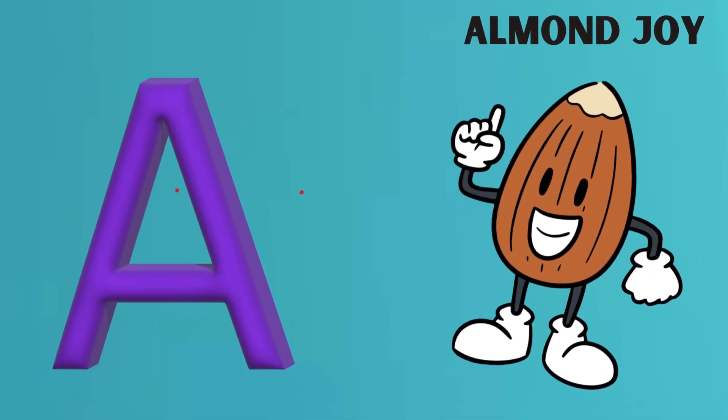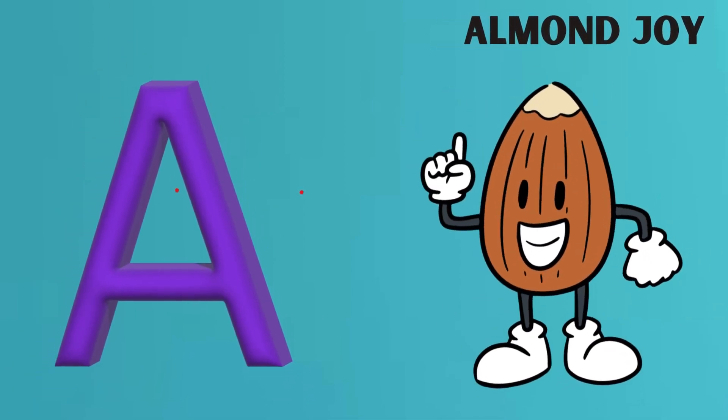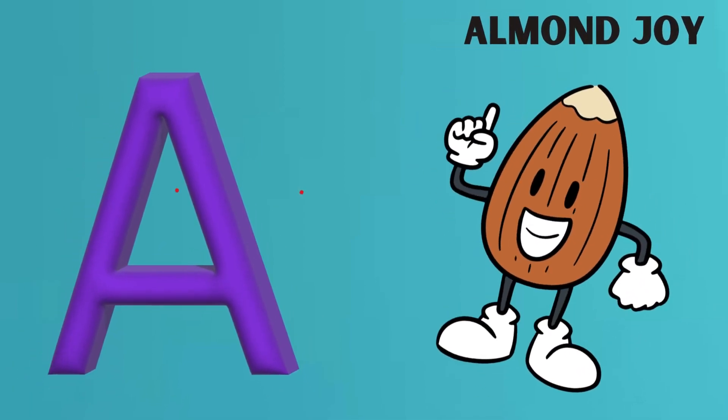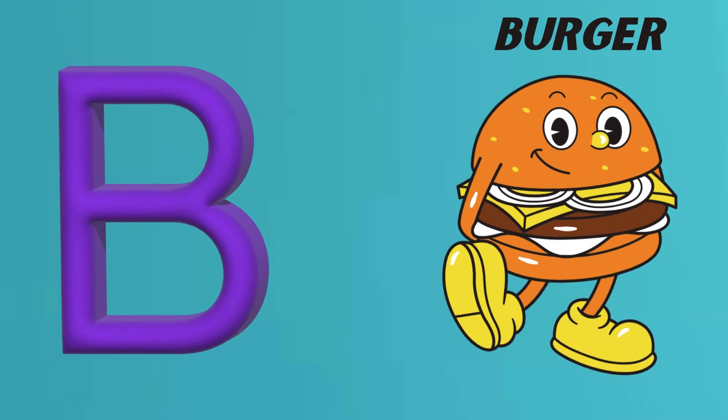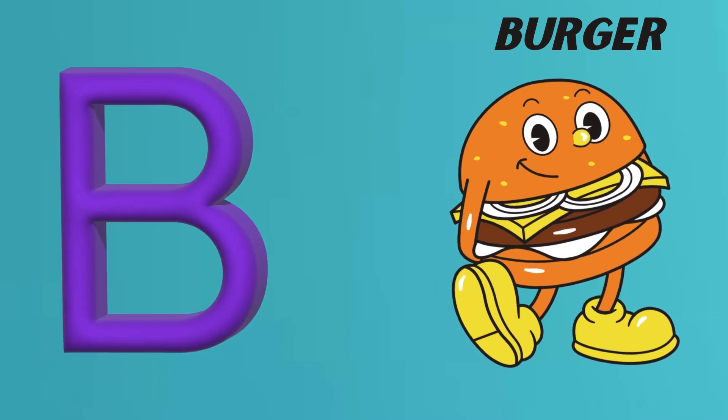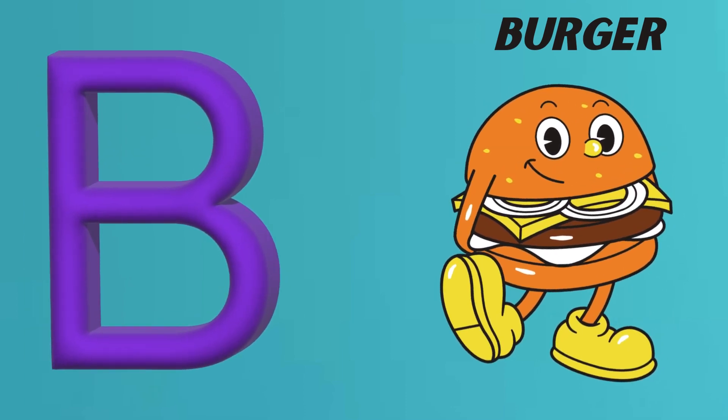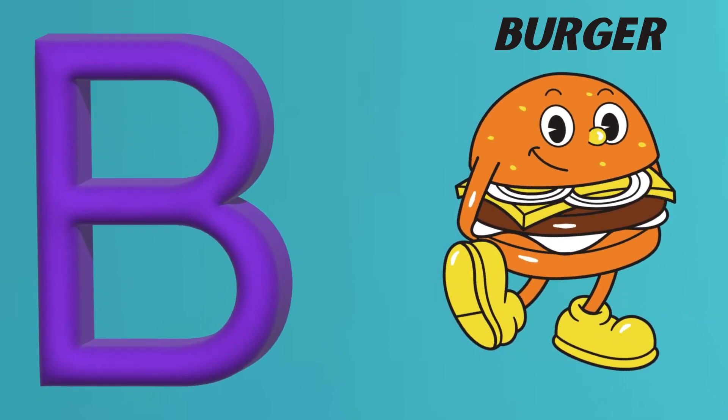A is for Almond Joy. Almond Joy. B is for Burger. Burger.